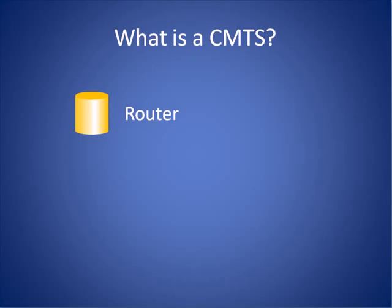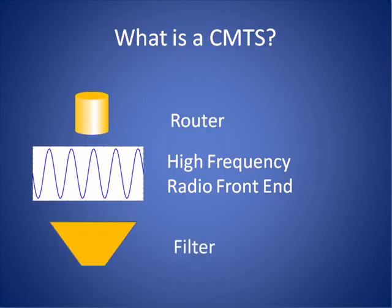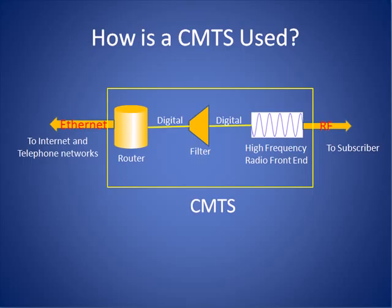Now let's move on to our discussion of the CMTS. A CMTS consists of three parts: a router, a high frequency radio front end, and a filter. You can think of a CMTS as a router with an ethernet interface on one end and an RF interface on the other.